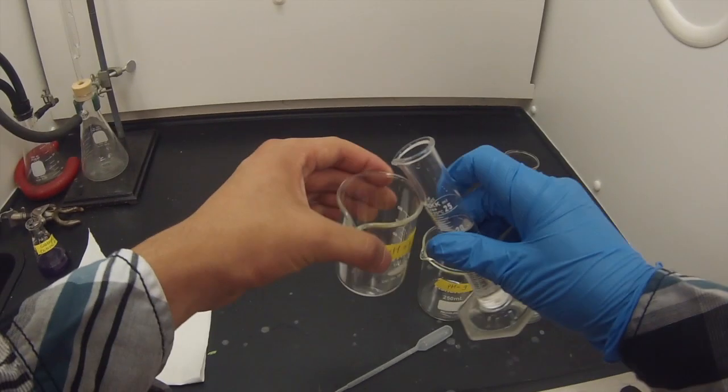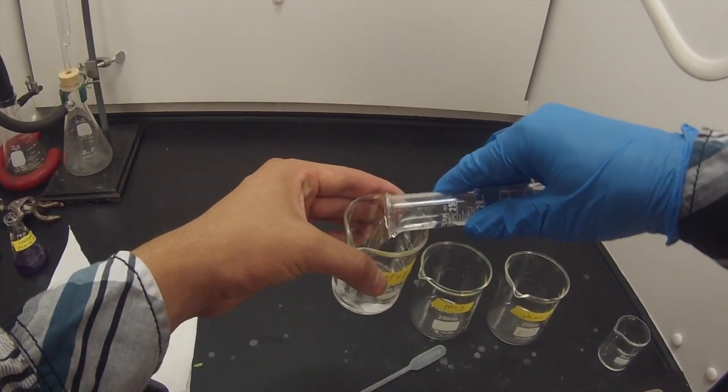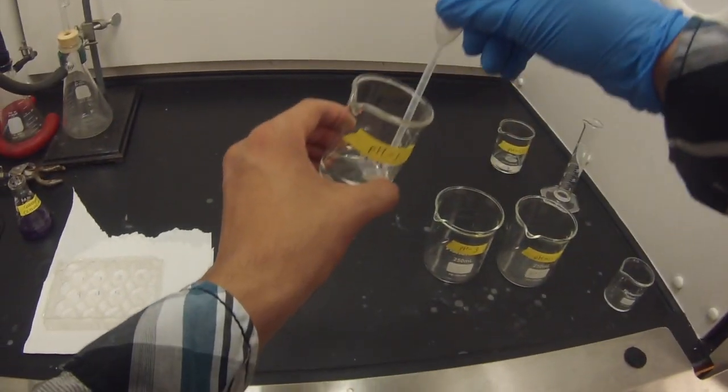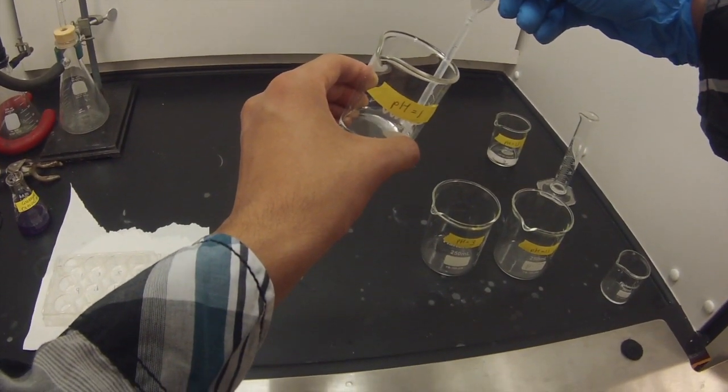Making the pH solutions, you'll want to take 20 milliliters of hydrochloric acid and add that into a 100 milliliter beaker labeled pH 1. From this, take one milliliter and add it to a 250 milliliter beaker labeled pH 3.